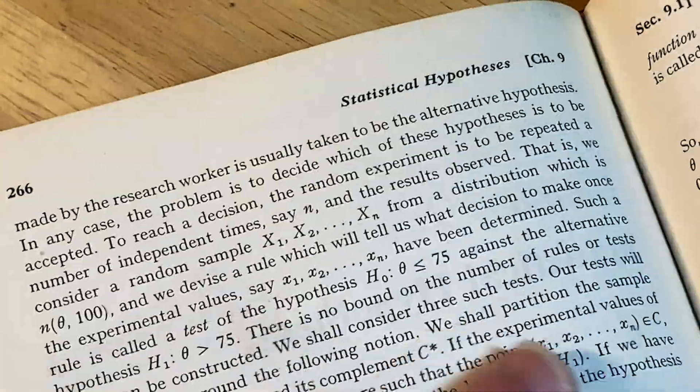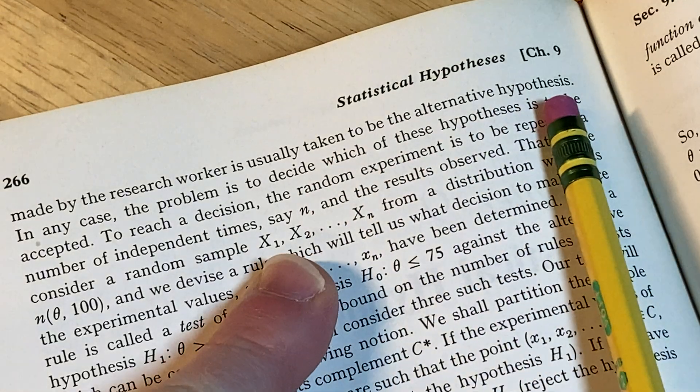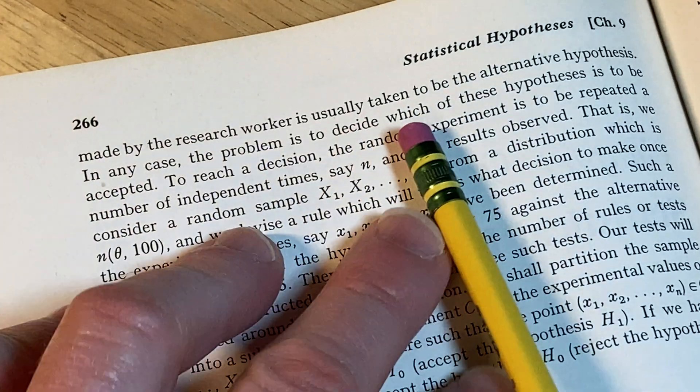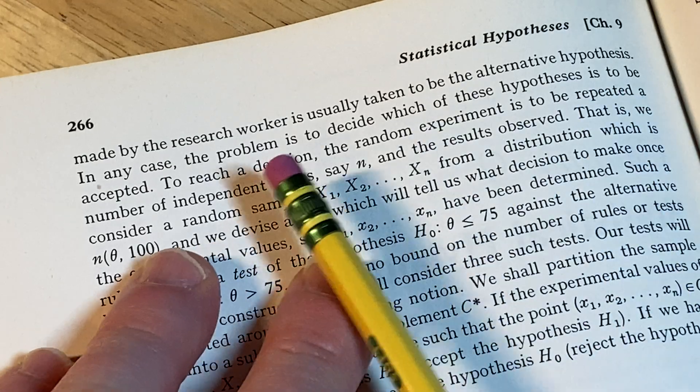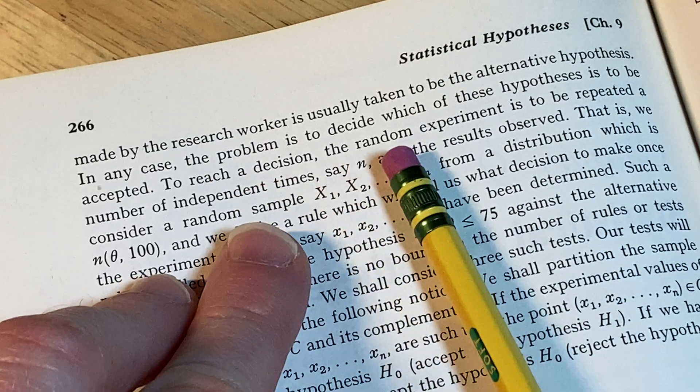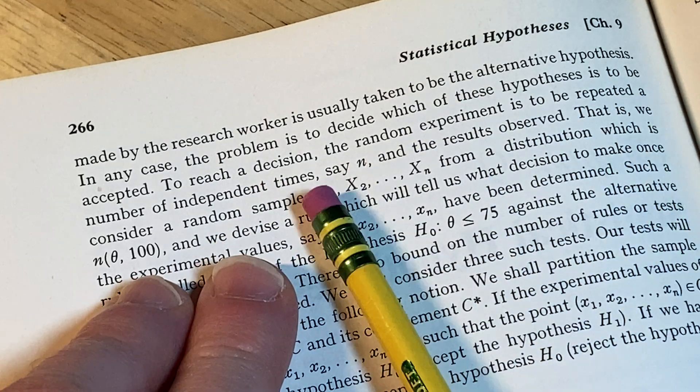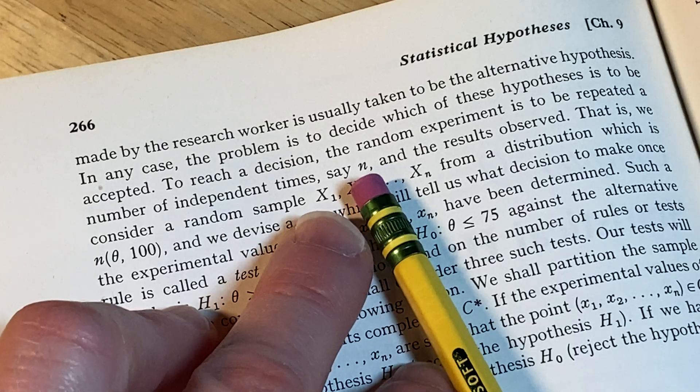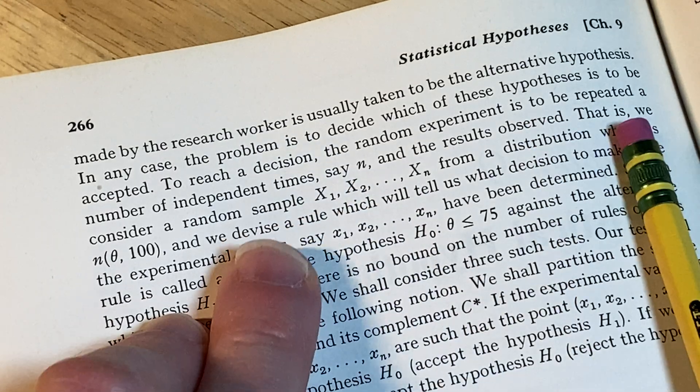Which is made by the research worker is usually taken to be the alternative hypothesis. In any case, the problem is to decide which of these hypotheses is to be accepted. To reach a decision, the random experiment is to be repeated a number of independent times, say n, and the results observed.